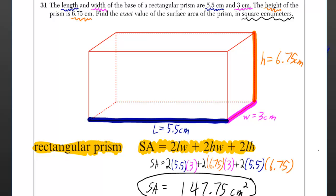The length and width of the base of a rectangular prism are 5.5 centimeters and 3 centimeters. The height of the prism is 6.75 centimeters. Find the exact value of the surface area of the prism in square centimeters.